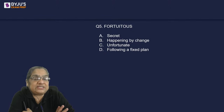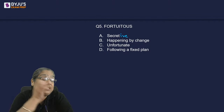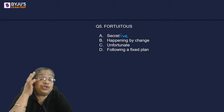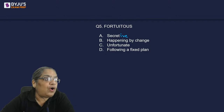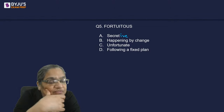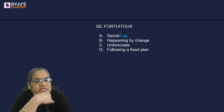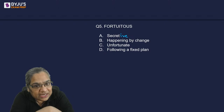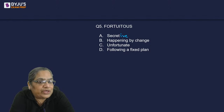Question 5: what is the meaning of 'fortuitous'? Options: something that is secretive, something that happens by chance, something that is unfortunate, or something that follows a fixed plan.